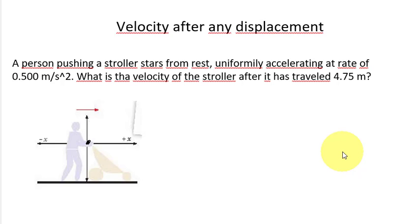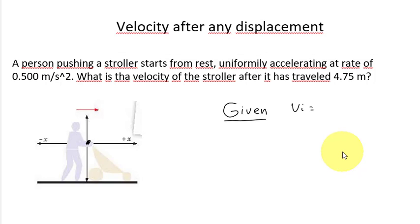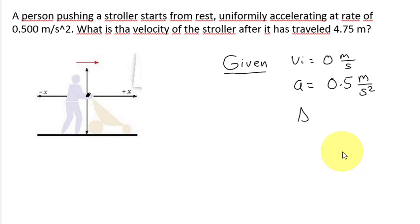Now we need to know what we know and what we want to know. The initial velocity we know is zero meters per second, because we start from rest. We also know the acceleration is 0.5 meters per second squared. We want to know the displacement, and we want to know the final velocity after 4.75 meters.